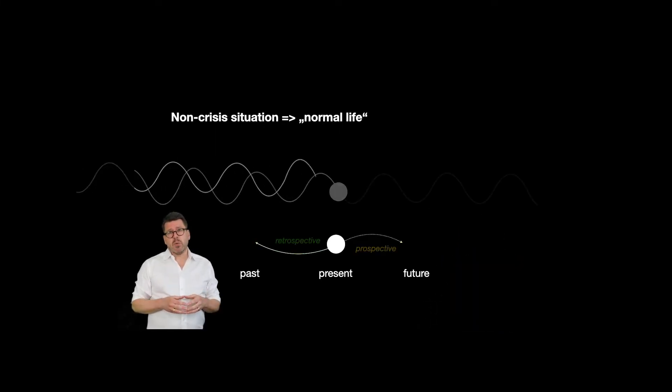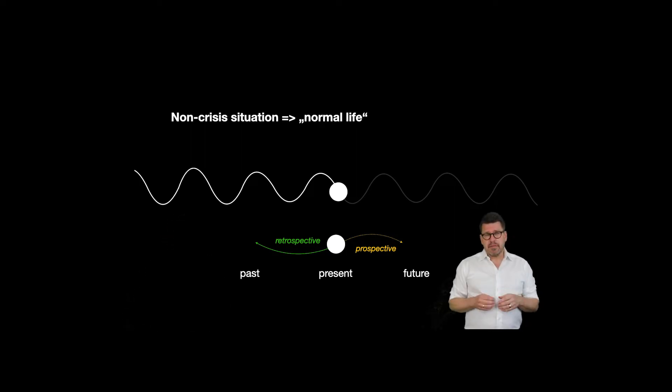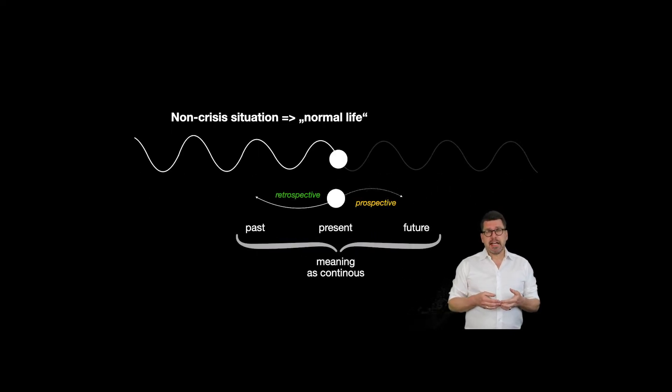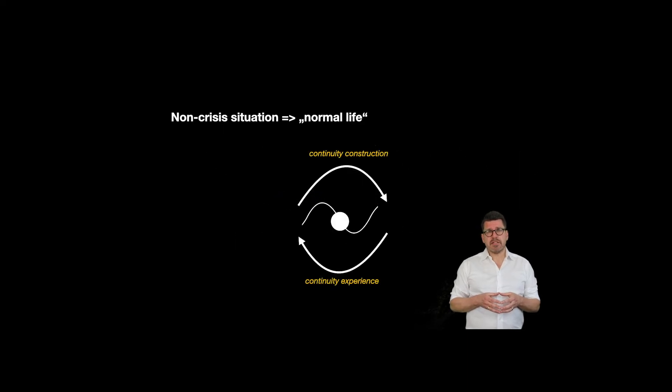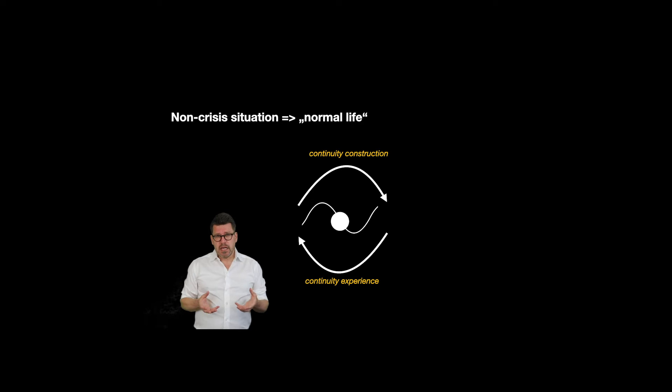In the normal state, we always have a retro perspective and a prospective in which we construct meaning. This specific form of world exploration is given to us in normal times as a matter of course in a fundamental way, as a continuity experience as well as a continuity construction. Since we construct the world continuously, we can experience it as continuous, and vice versa.